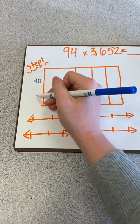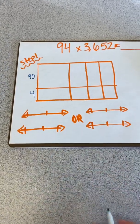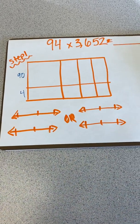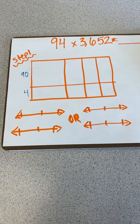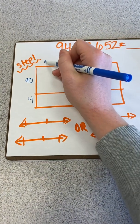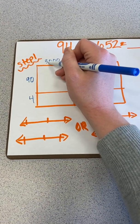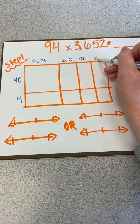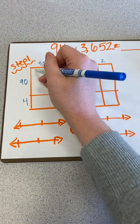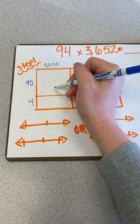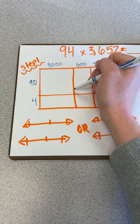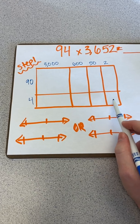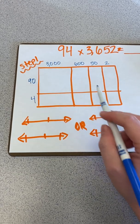I'm going to first decompose the numbers based on their values. So 94 has the 9 has a value of 90 and the 4 has a value of 4 ones. And then the same thing with 3,652. My first box is going to be the greatest value since it is the biggest box as one way to remind myself that. And my box down here is the smallest so it should have the smallest value.